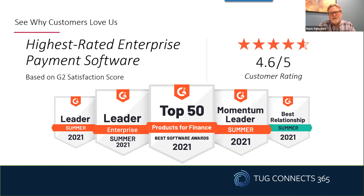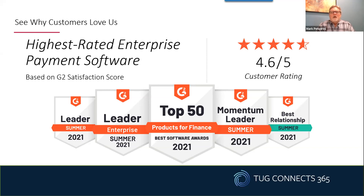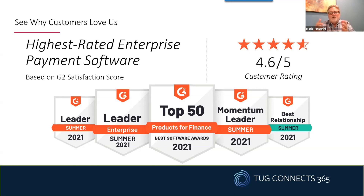One thing we're very excited about is G2 — we call it the Yelp for business. It's a place where you can look up company scores and see who's given them ratings. We look at that very strategically. We're in the top 50 products for finance, and I'd encourage you to look at G2 when you start to evaluate moving to payment technology and moving away from doing it internally.